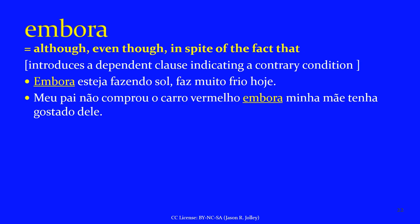All of the previous subordinating conjunctions are more or less informal and fairly common. With EMBORA, we're transitioning into some that are a little more formal — you'll still hear them in speech but definitely see them in writing. EMBORA means 'although,' 'even though,' or 'in spite of the fact that.' It introduces a dependent clause indicating a contrary condition and always requires the subjunctive. 'Embora esteja fazendo sol, faz muito frio hoje' — even though it's sunny, it's very cold today. Inverted: 'Faz muito frio hoje, embora esteja fazendo sol.' 'Meu pai não comprou o carro vermelho, embora minha mãe tenha gostado dele' — he didn't buy the red car, even though my mother liked it.